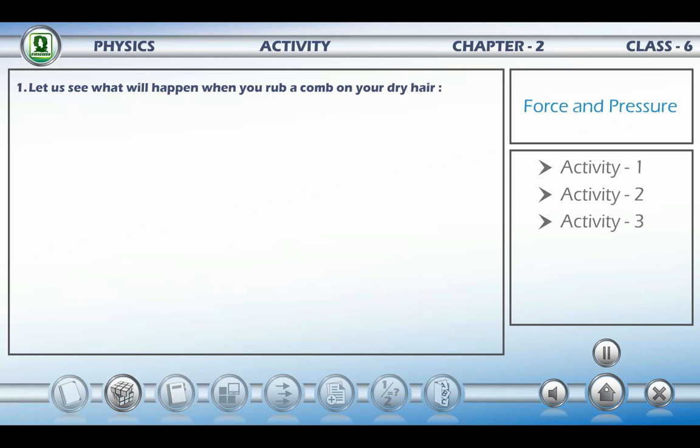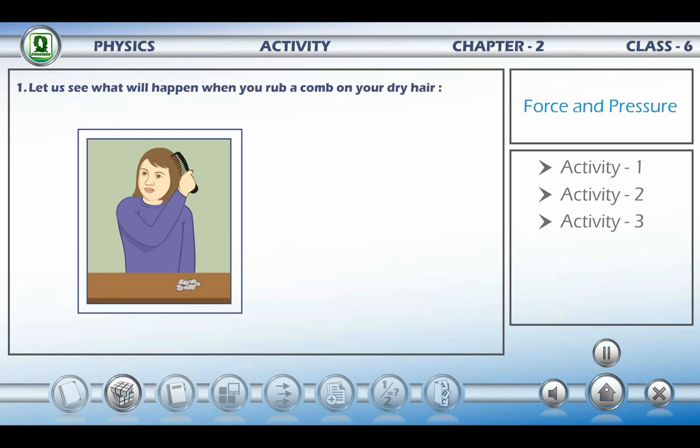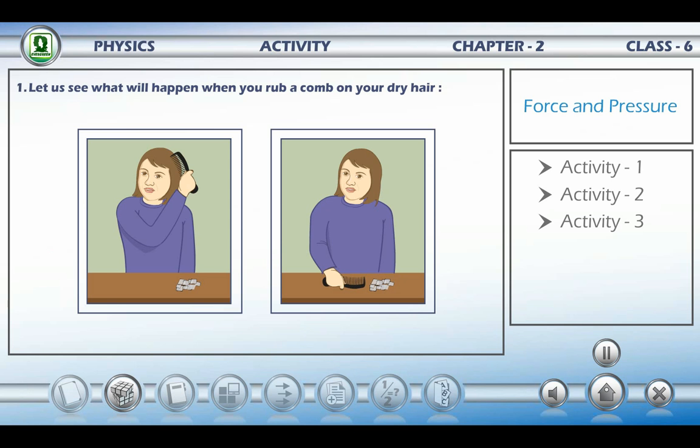Activity 1. Rub a comb into your dry hair. It will charge the comb. Now, bring the charged comb near tiny pieces of paper. These tiny pieces are uncharged. The pieces of paper will be attracted towards the comb. It is due to the electrostatic force. The electrostatic force arises due to the charge acquired by the comb on rubbing.